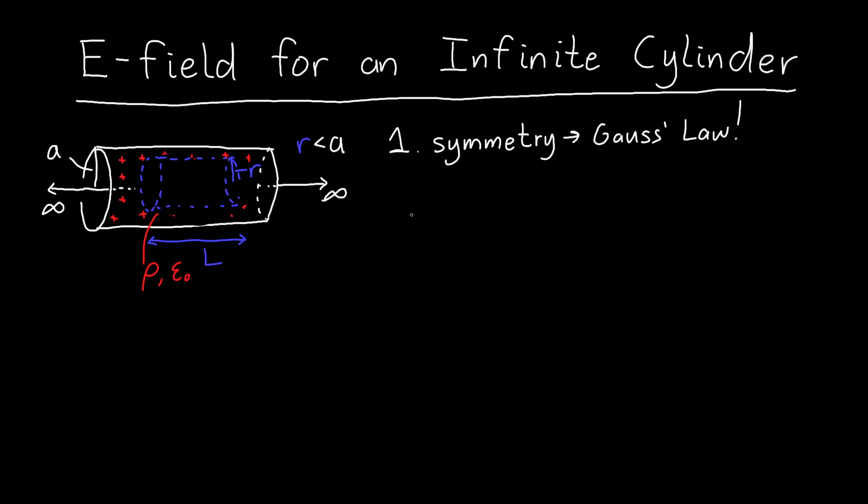So now that we've chosen our Gaussian surface, we just need to apply Gauss's law, and Gauss's law says that the electric flux is equal to the enclosed charge divided by the permittivity, which here is epsilon naught.